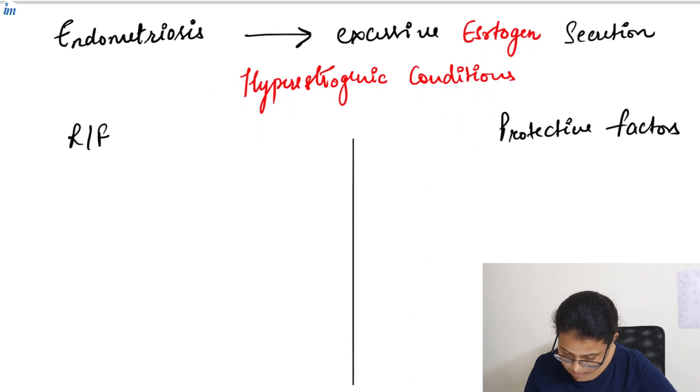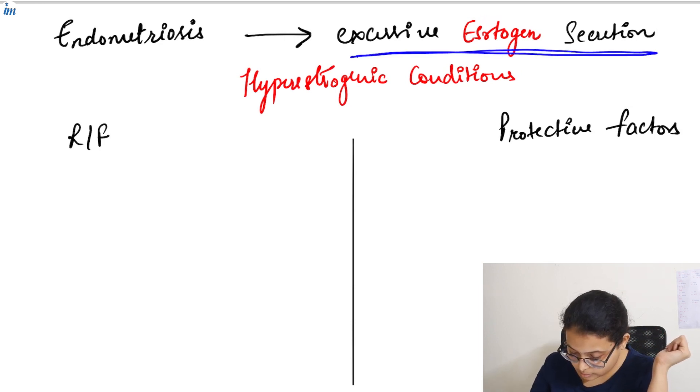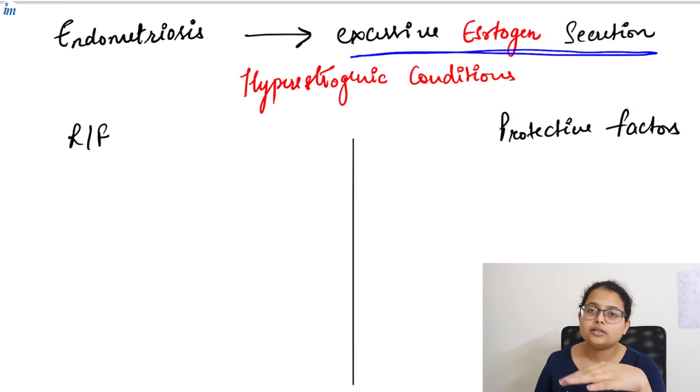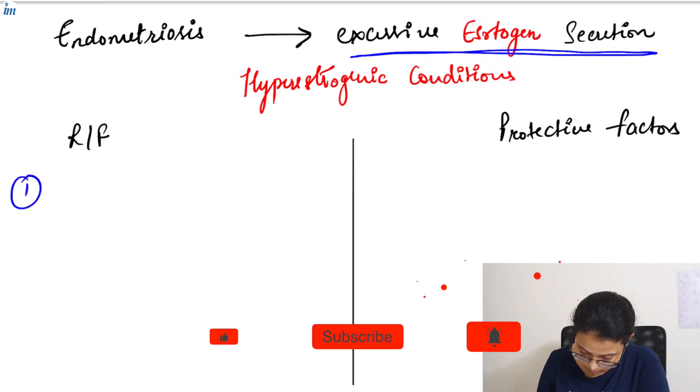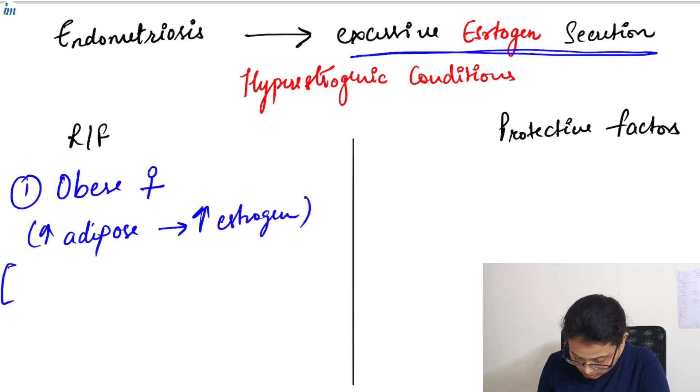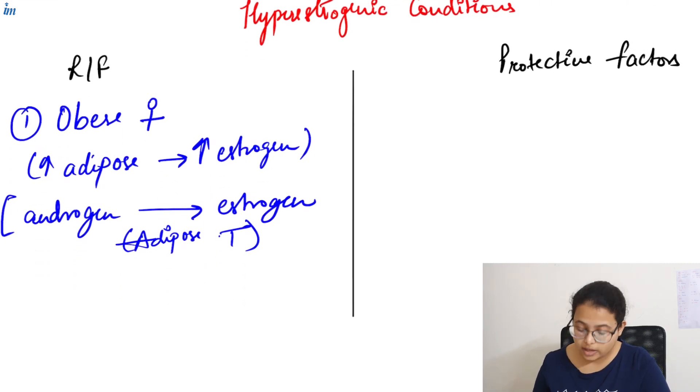Now, let's see the pathology of endometriosis. Basically, it is a hyperestrogenic condition due to excessive secretion of estrogen. There are different risk factors related to hyperestrogenic condition and different protective factors as well. First, we will see the risk factors. First, we have obese females. In obese females, there is a lot of adipose tissue. As a result, they have high estrogen levels, as androgen gets converted to estrogen in adipose tissue. Since there is a lot of adipose tissue, the estrogen levels are also high in obese females. So, for this, in the protective factor, we have physical activity.